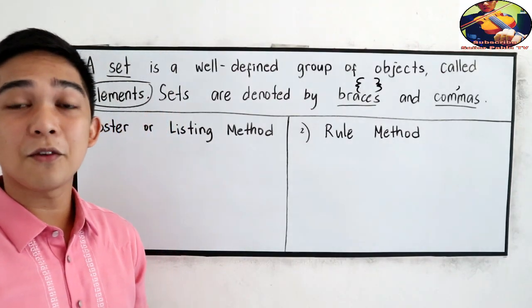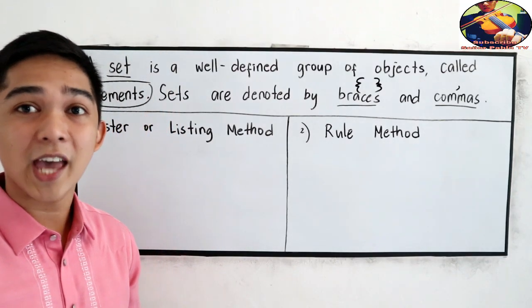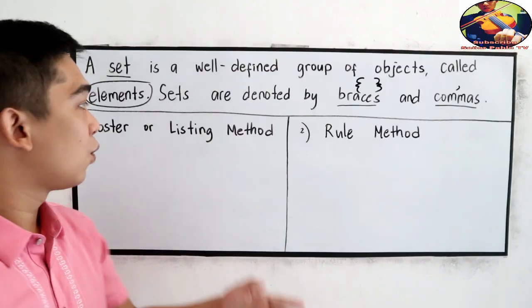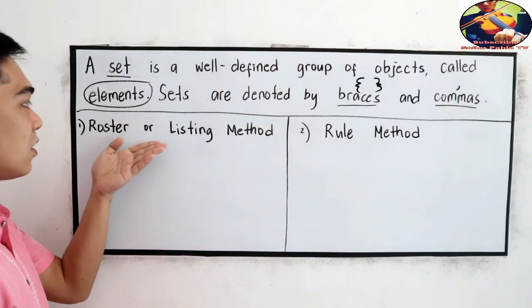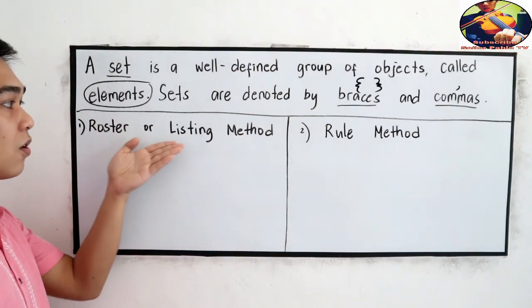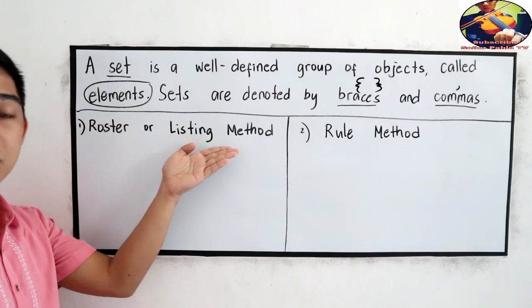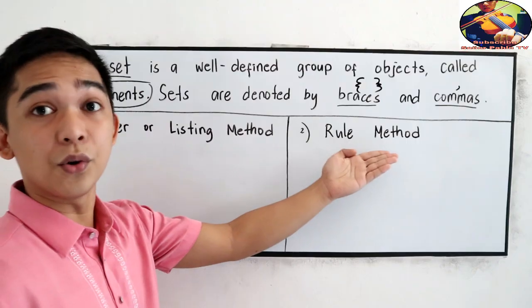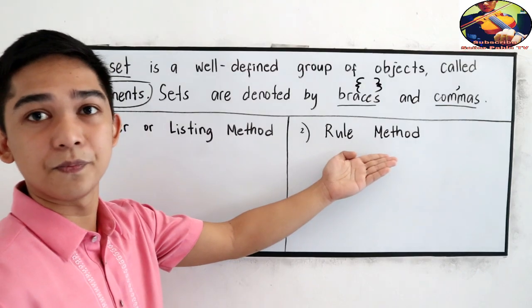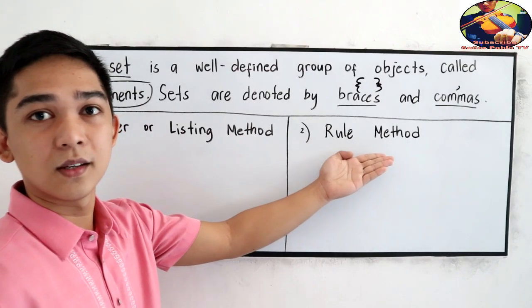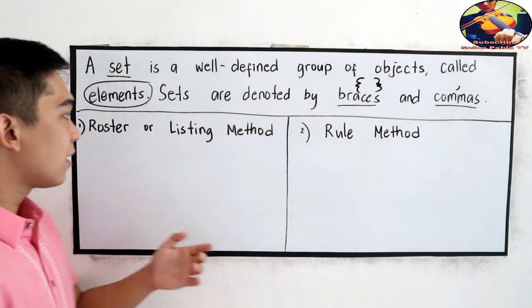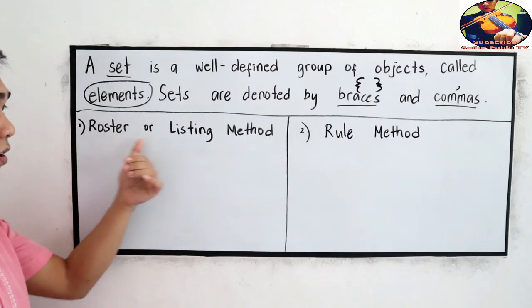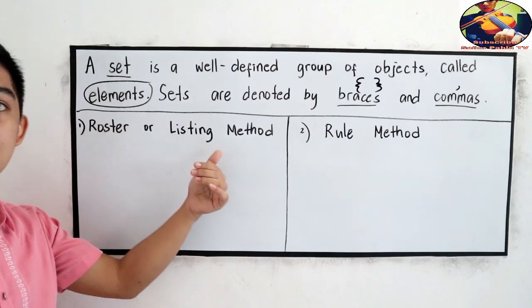We can define a set in two ways: the roster or listing method, and the rule method. Let us first discuss the roster or listing method.